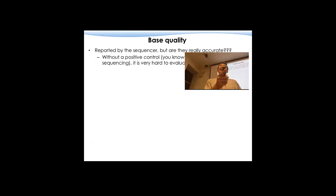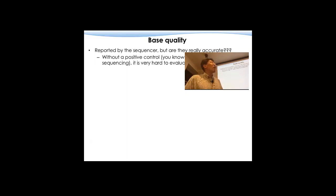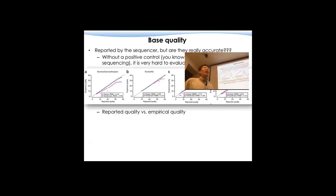If Q30, that means there is a 0.1% chance of making a mistake. That is pretty small. So this base quality is reported by the sequencer, but sometimes we need to ask the question: are they really accurate? This is a very difficult question to answer without a real positive control — meaning that you know exactly what you are sequencing. In many cases, we don't.